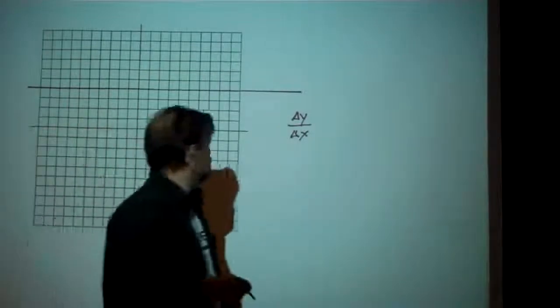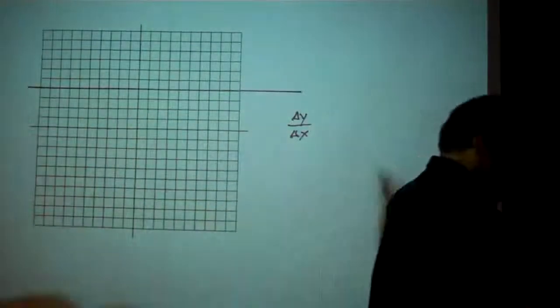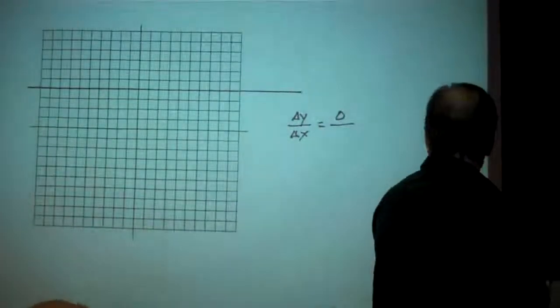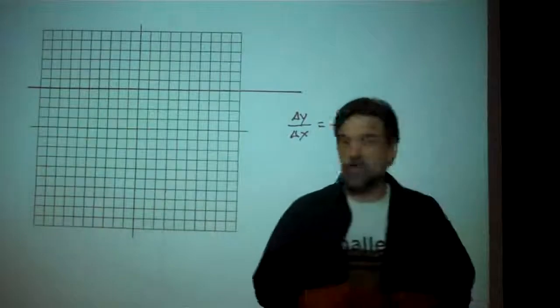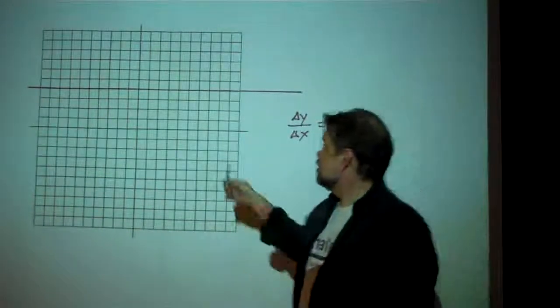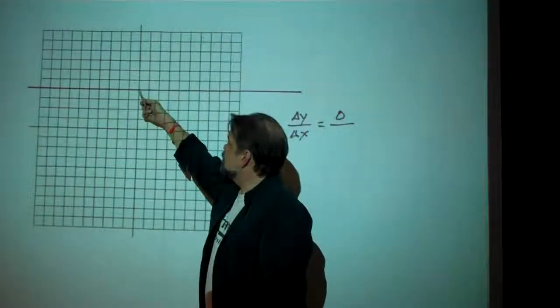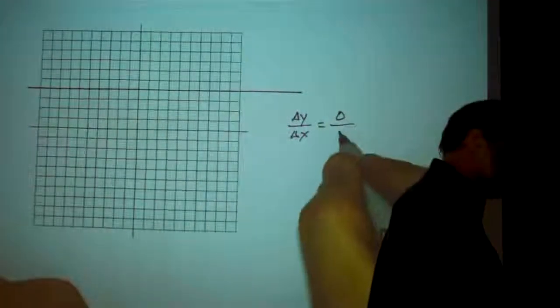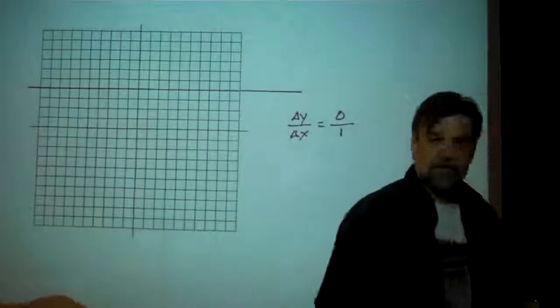So what I'm finding is no matter what two points I look at, the change in y is going to be 0, and the change in x is going to be something. Let's go from (0,4) to (1,4). So the change in x is 1.